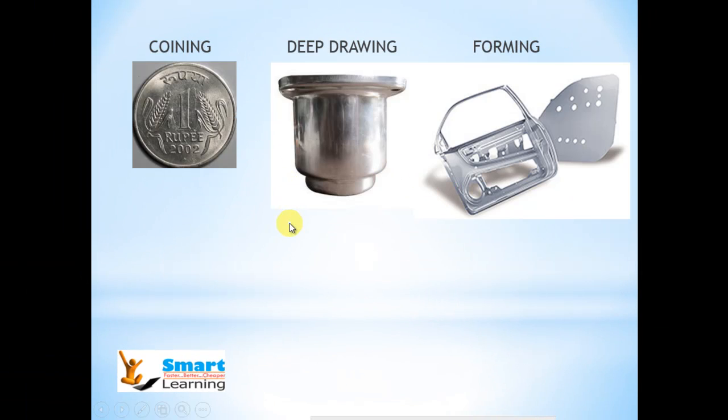Now we will discuss coining operation. Coining is slightly different from embossing. If you cut the cross section of a coined part, you can see variation in the thickness throughout the area. The perfect example of coining is the coins which we use, like one rupee or two rupee coins.